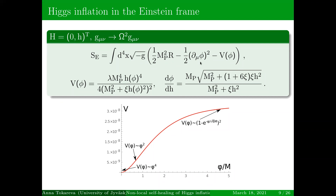This is the Einstein frame formulation of the action for the Higgs field. We make a conformal transformation and after this transformation we arrive at an action where gravity and the Higgs are separated — gravity is like Einstein theory — and the potential has a very complicated form that's not possible to write analytically over the whole range of fields.